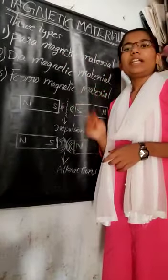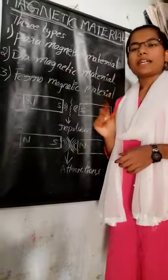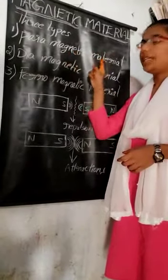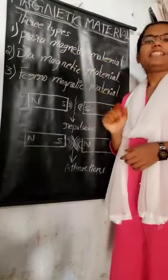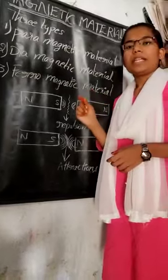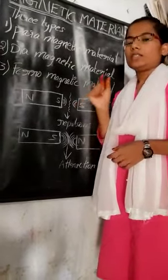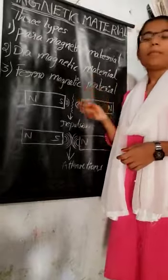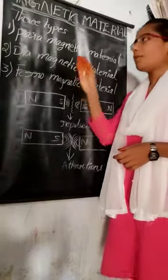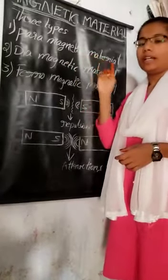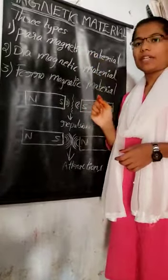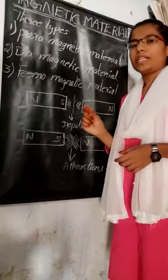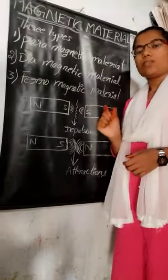The material which are weakly attracted by a magnet is called paramagnetic material. The example of paramagnetic material is aluminum and platinum. And the permeability of paramagnetic material is positive and small.